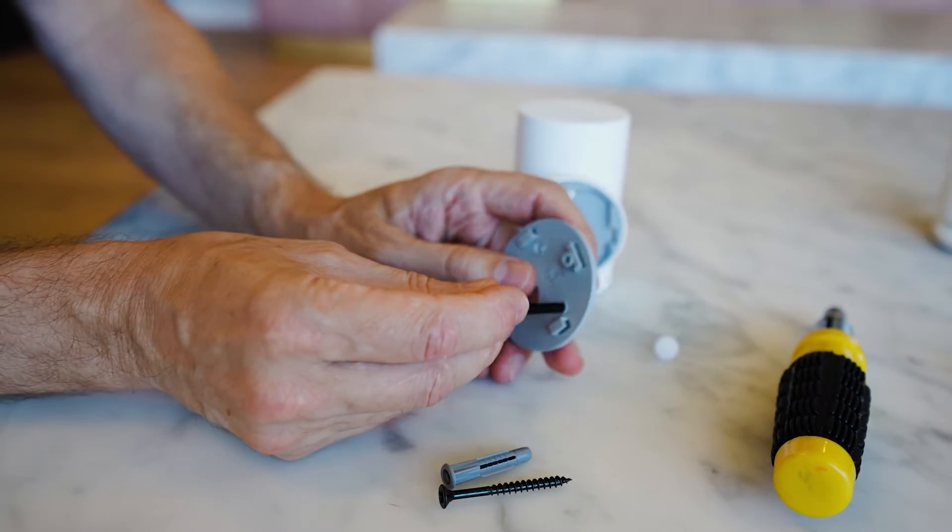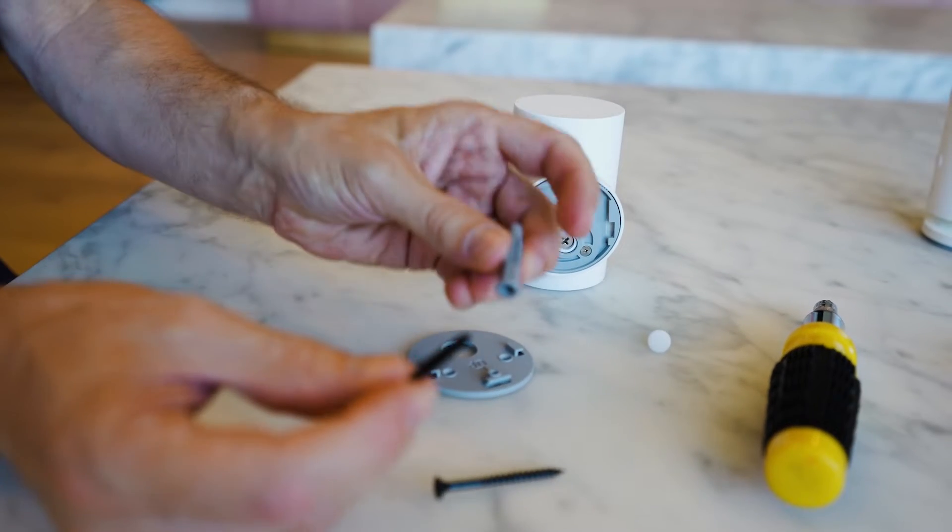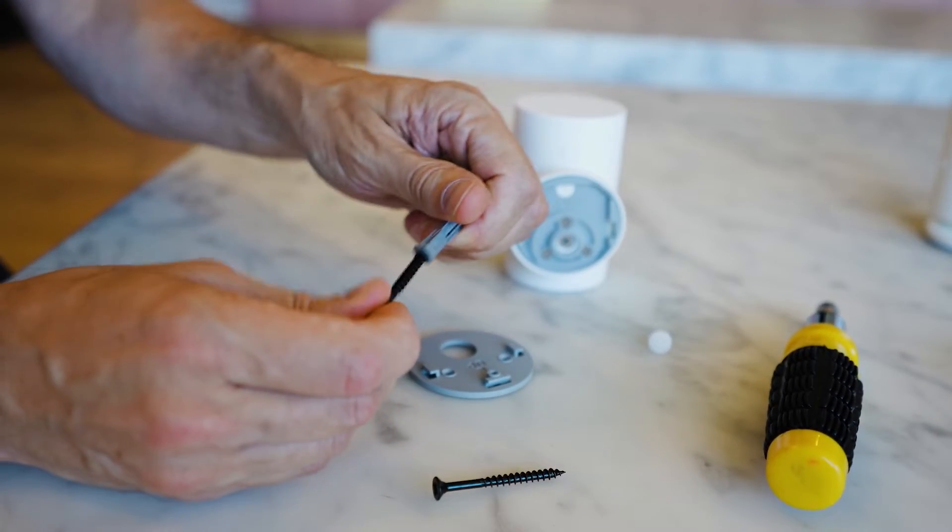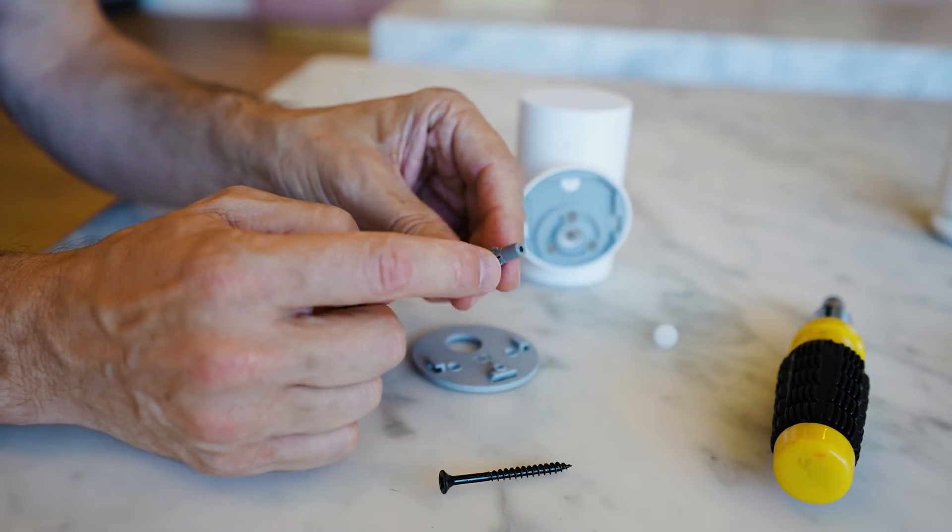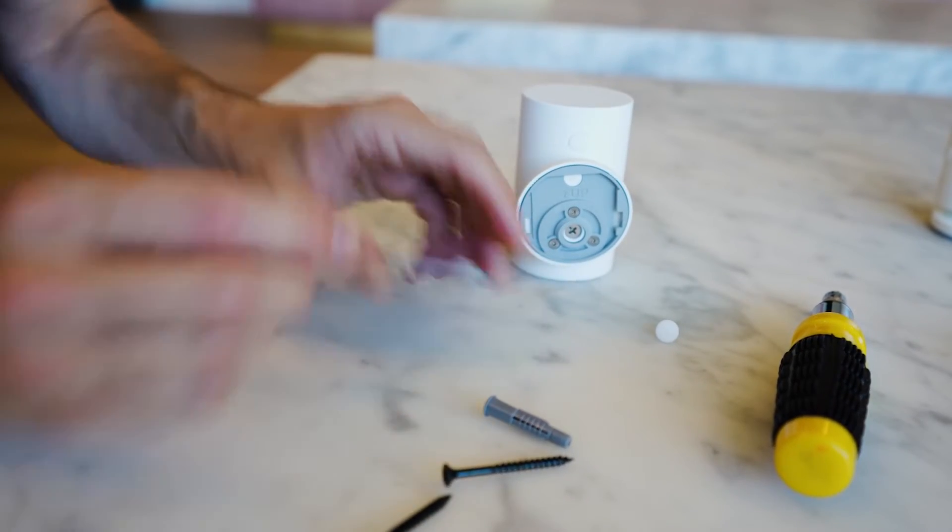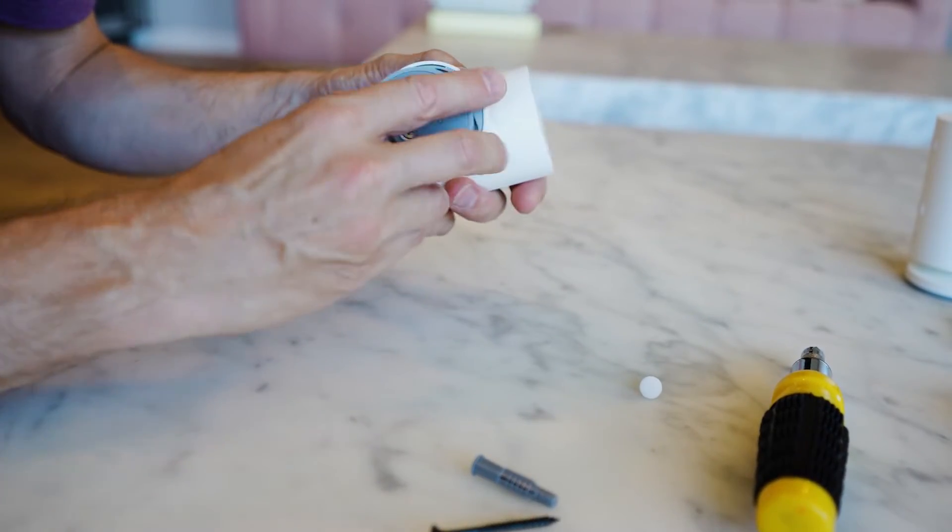So you get a couple of screws and you get an anchor. So these screws would go through here. You're gonna drill this into your wall. And you can get a separate kit with the right drill bit for this. You mount this to your wall. And then once you've got it set up, you're just gonna slide this on.